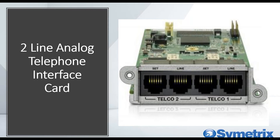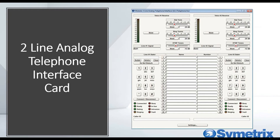Another option is the analog telephone interface card, a two-line card that works with a normal POTS connection. This gives you all the standard functionality you'd expect: speed dials, redial, DTMF decoding, caller ID, and all of that. Here's a quick look at the interface for that.